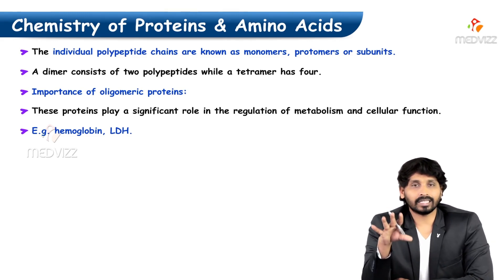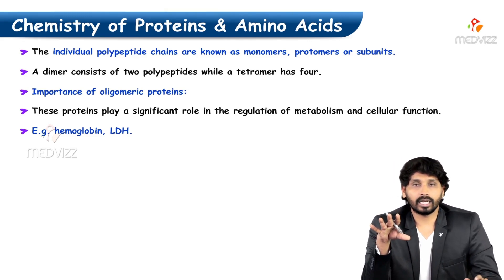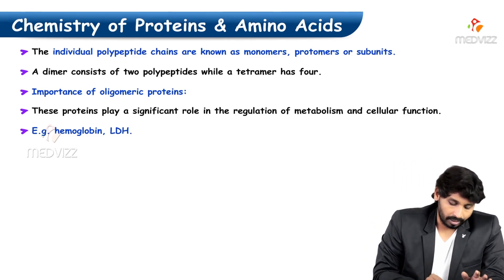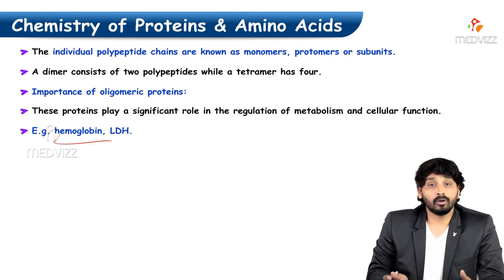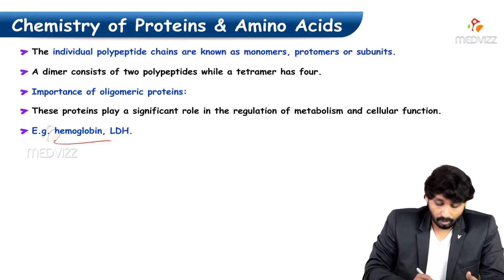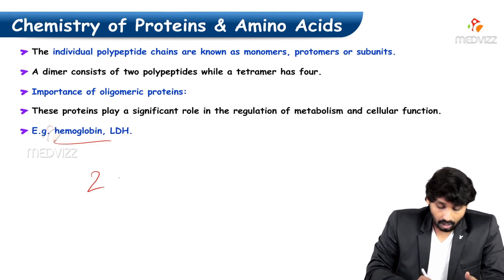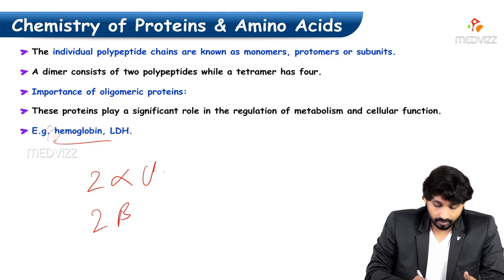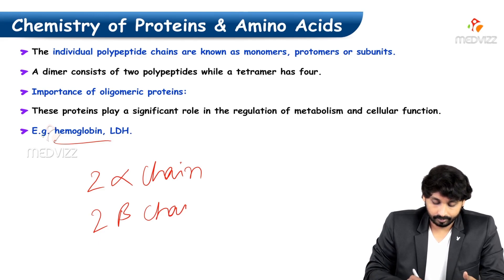The classical example for Quaternary Structure is hemoglobin. Hemoglobin is made up of two alpha chains and two beta chains — so it has two alpha and two beta units.